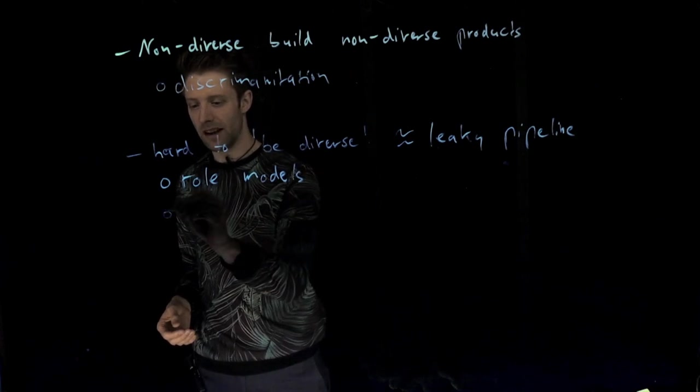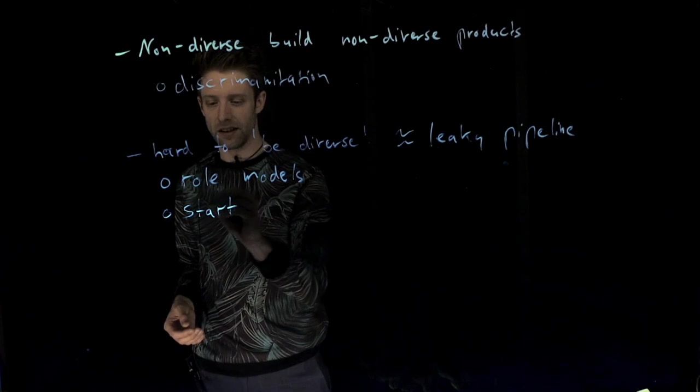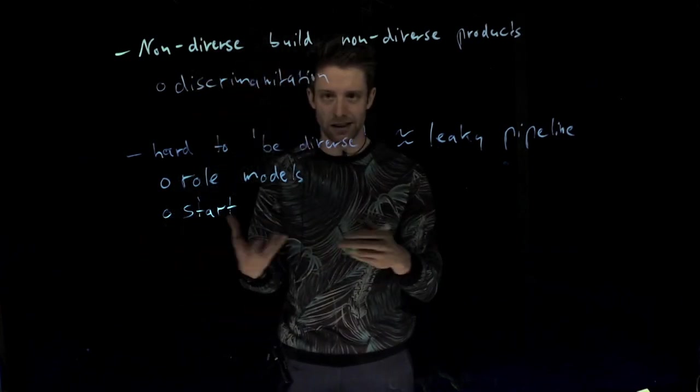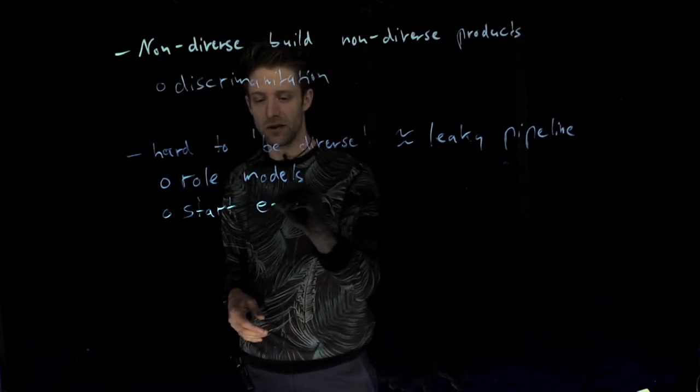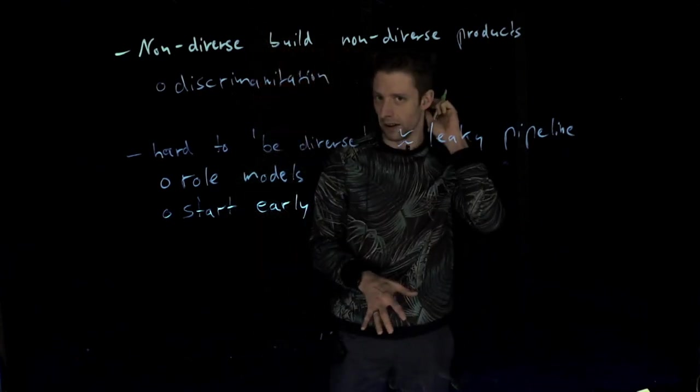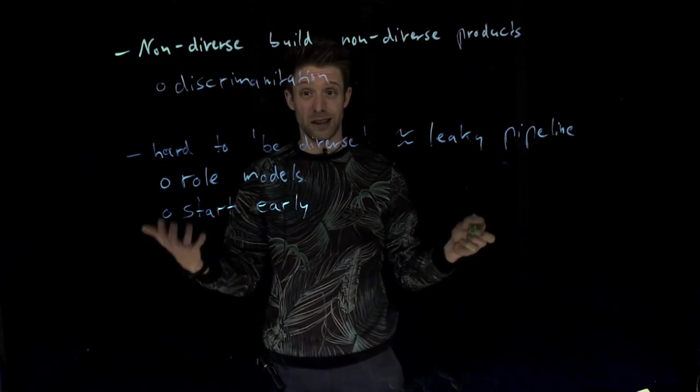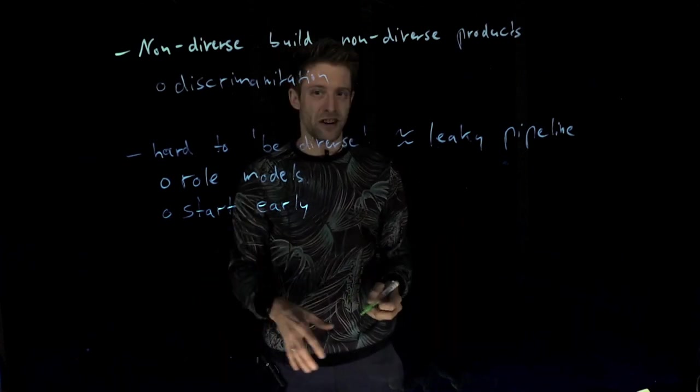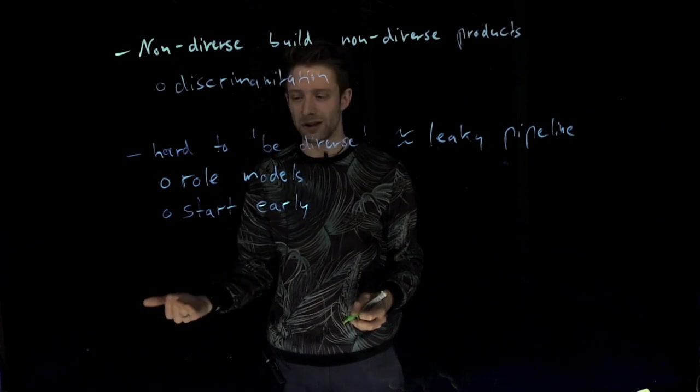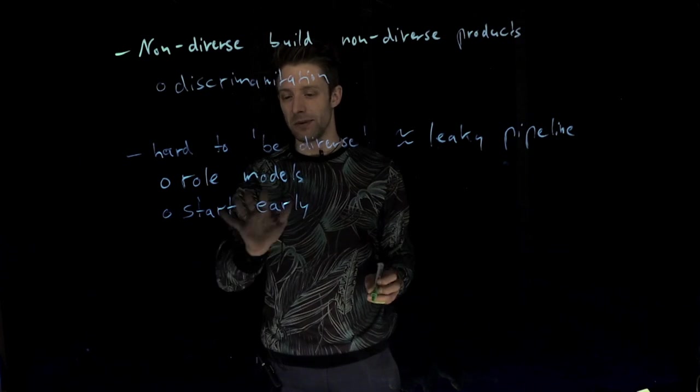Another point that is taken up increasingly in the computer science in the STEM education world is that you actually need to start early encouraging people with a diverse background. So stereotypes about how, for example, computer science looks like can start very, very early in primary school. And that's why there are, for example, in the US, I don't know as much about Iceland here, but I know there are some initiatives.